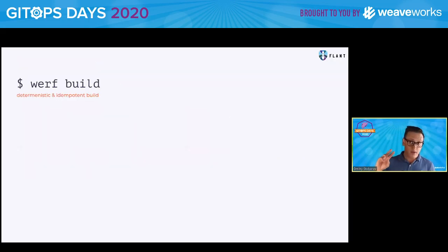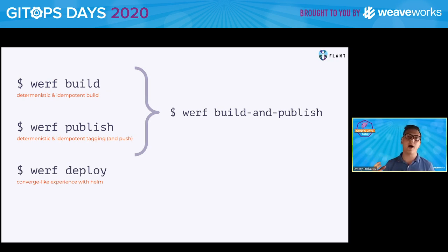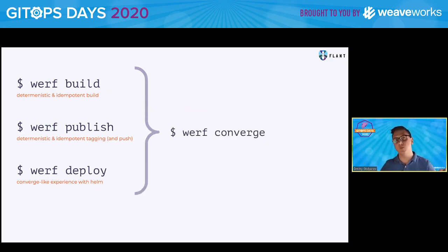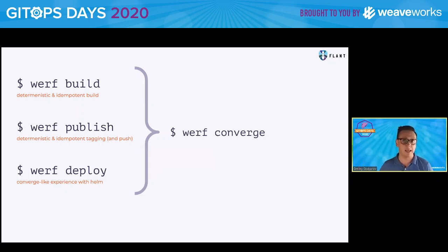We have three main commands: werf build, werf publish, and werf deploy. You can use them separately, or use one combined command werf build-and-publish and werf deploy, or just one command: werf converge. Basically, it makes the desired state of the cluster and the registry as it should be, as defined in Git.